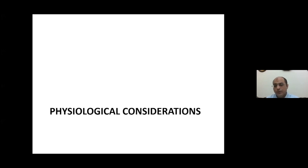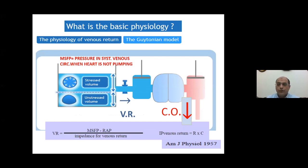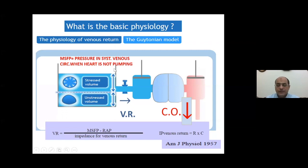A very nice basic interpretation is the Guyton model. Professor Arthur Guyton illustrated the physiology of venous return and cardiac output, a long time ago in 1955. He demonstrated that the circulation is composed of a venous side, represented by a tank containing stressed volume and unstressed volume. The stressed volume is the portion of the venous circulation that shares in venous return, applying pressure on the venous wall, yielding what we know as mean systemic venous pressure or mean systemic filling pressure.